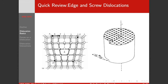The other big player is the screw dislocation. It's a little more difficult to visualize, but you can think of it as a ramp, as a screw — like a parking garage. It's the blacktop surface; I go around and around, and I haven't gone up any steps, but all of a sudden I'm one level higher. Here we have a closure failure of our Burgers circuit — our Burgers vector is pointing up, basically parallel to our dislocation line. So in an edge dislocation, the Burgers vector is perpendicular to the dislocation line. In a screw dislocation, the Burgers vector is parallel to the dislocation line.